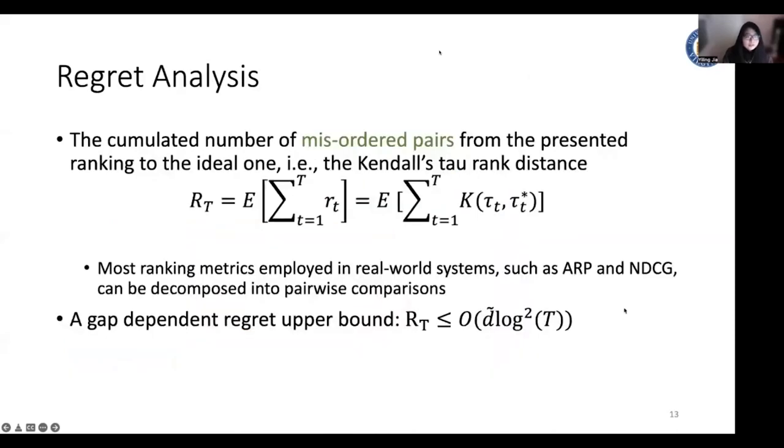To analyze the theoretical property of our proposed ranking policy, we perform a regret analysis. The regret is defined as the cumulative number of misordered pairs from the presented ranking to the ideal one. And we proved a gap-dependent regret upper bound for our proposed ranking policy.